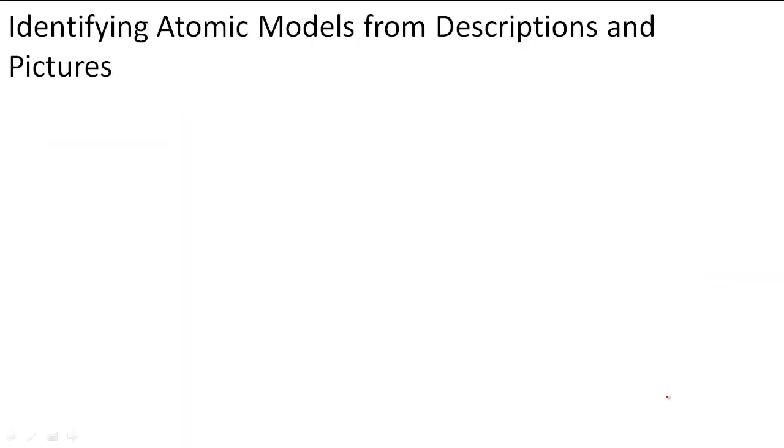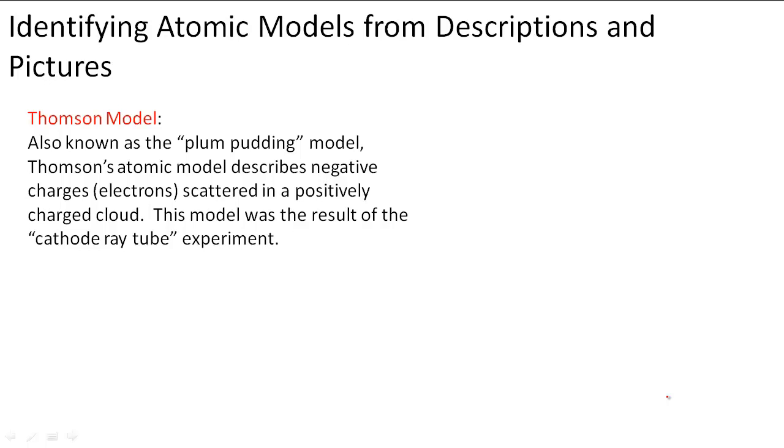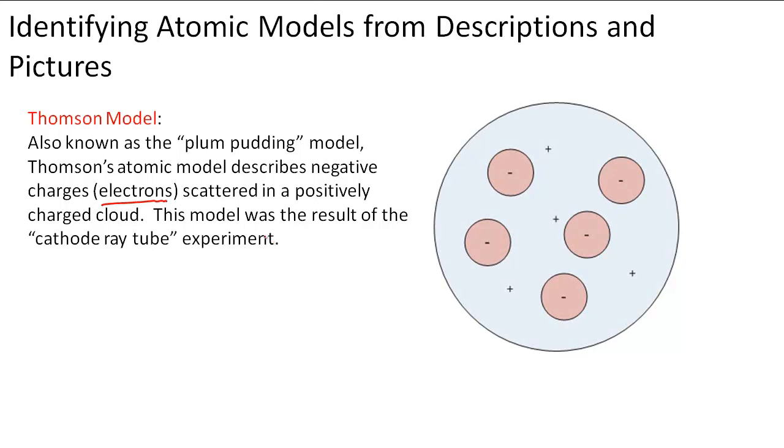Now let's take a look at identifying some atomic models from their descriptions and their pictures, so that you know when asked what atomic theory and where it came from, what experiments it came from. So the first one we're going to talk about is the Thompson model. It's also known as the plum pudding model, because Thompson's atomic model described the negative charges, or the electrons, that are scattered in a positively charged cloud. And this model was the result of the cathode ray tube experiment.